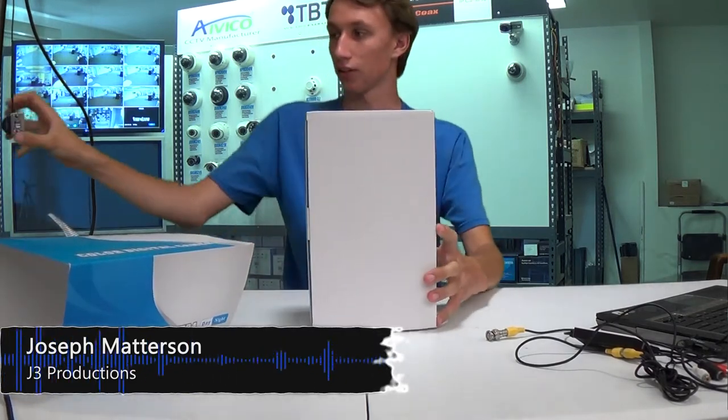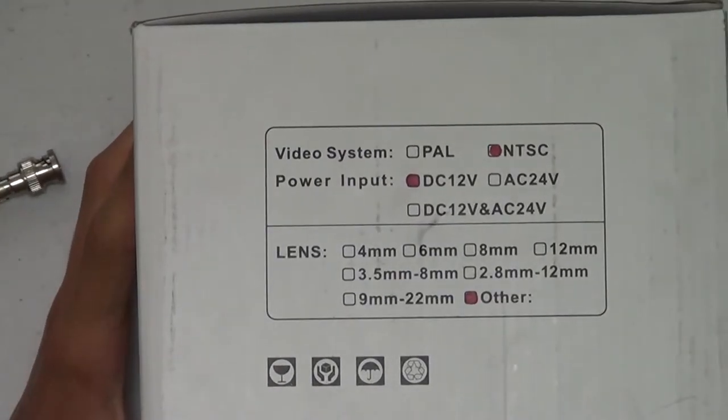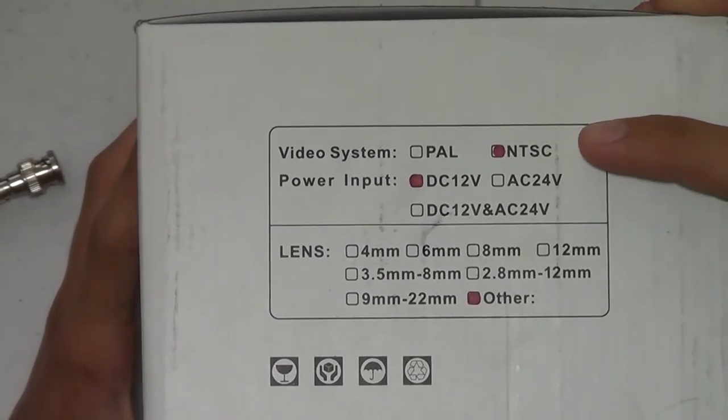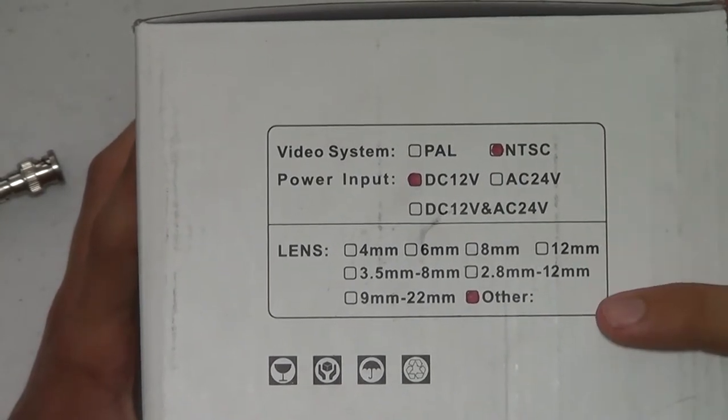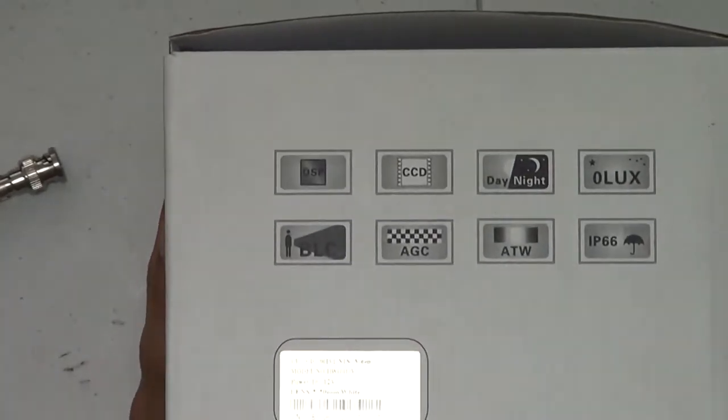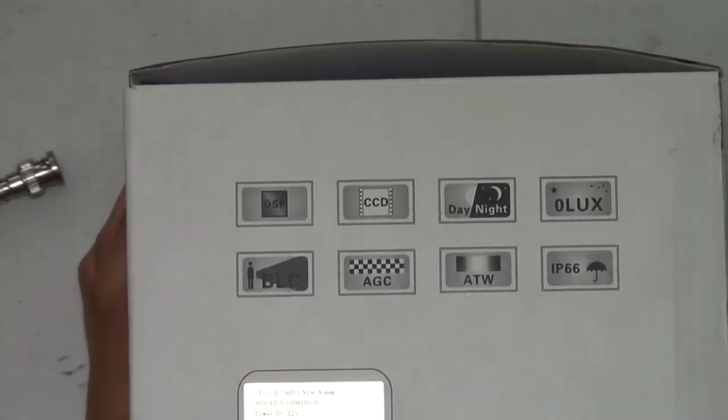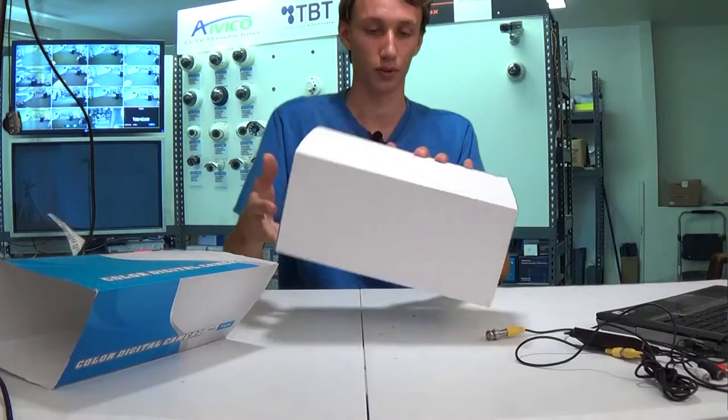It's got some specs on the outside of the box. As you can see here, it's got NTSC video format. This is a 12-volt DC camera, and this is actually custom manufactured, so you can only get this particular camera at Willy's Electronics. It's got some other specs here as well.